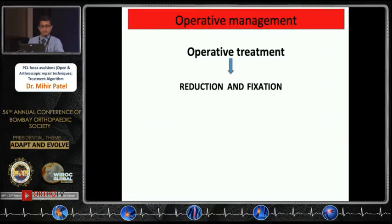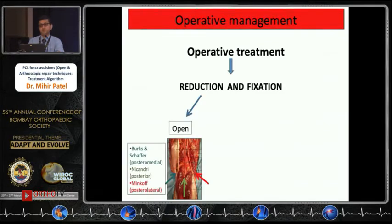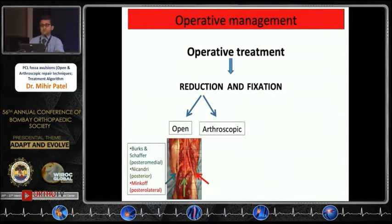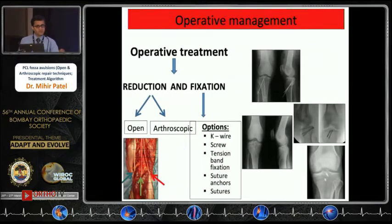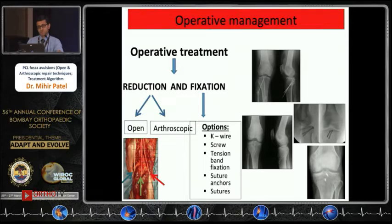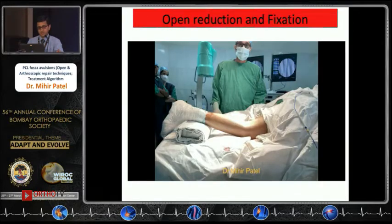The operative treatment flowchart is reduction and fixation. Reduction can be done open — via a medial approach through the gastroc, or lateral — or arthroscopically. Fixation can use a plethora of devices: K-wires, tension bands, suture anchors, and sutures. I'll first show a short video on open fixation.